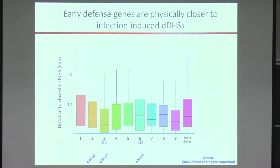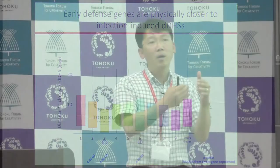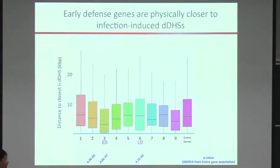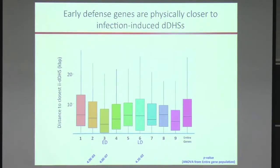We then looked at the distance from the approximately 300-400 DDHS — chromatin areas that open or close in response to infection — to the defense genes in clusters one through nine. The closest genes we found were defense genes in cluster one, followed by clusters two and six, and we decided to further investigate whether these DDHS are functionally connected to defense gene induction.